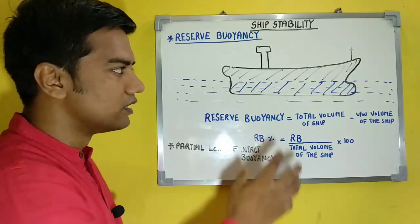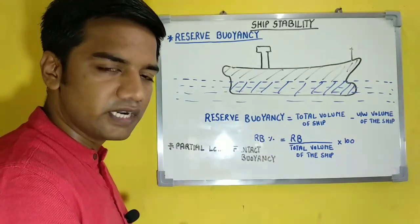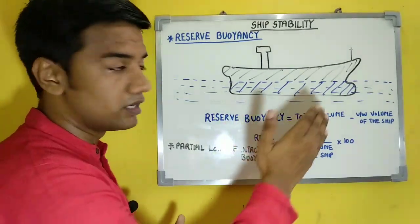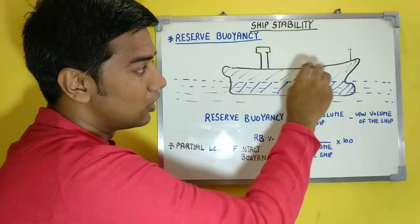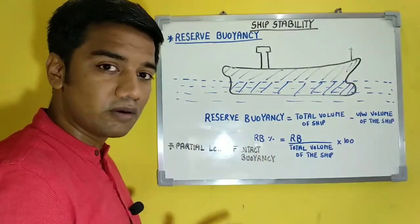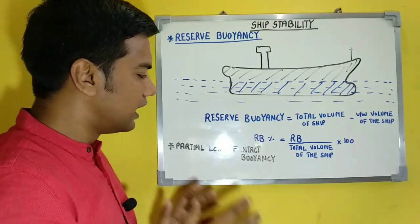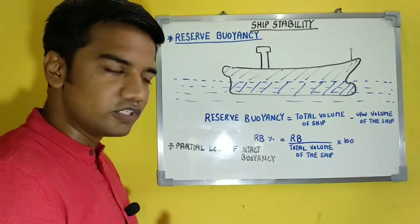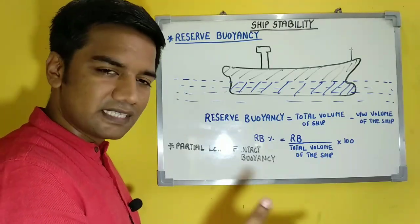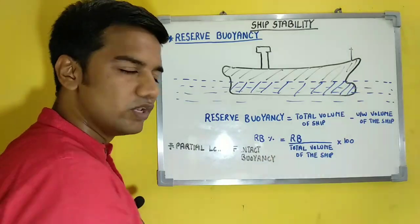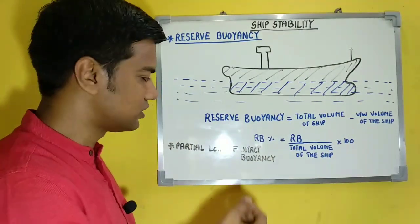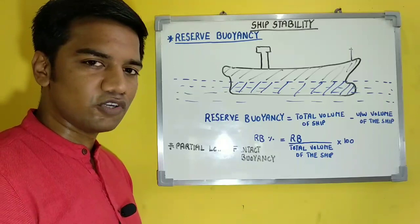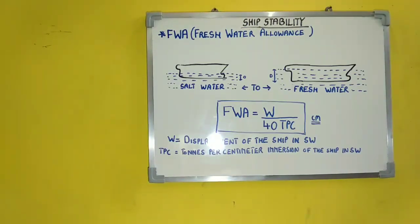Partial loss of intact buoyancy means there is a partial flooding occurring — one of the spaces has holes in it. That is a partial loss of buoyancy, due to which flooding is occurring in that compartment, but not in all compartments. Only one intact compartment is partially flooded; with time it will be completely flooded. This initial condition is known as partial loss of intact buoyancy, occurring when a hole is created and the intactness of the compartment is lost.